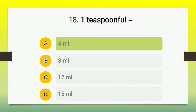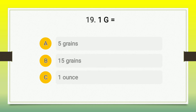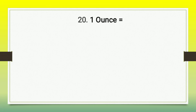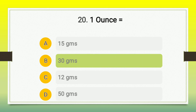Question number 19: one gram is equal to — A) 5 grains, B) 15 grains, C) 1 ounce, D) 15 ounce. The right answer is B, 15 grains. The last question: one ounce is equal to — A) 15 grams, B) 30 grams, C) 12 grams, D) 50 grams. The correct answer is option B, 30 grams. One ounce equals 30 grams, whereas one fluid ounce equals 30 ml.